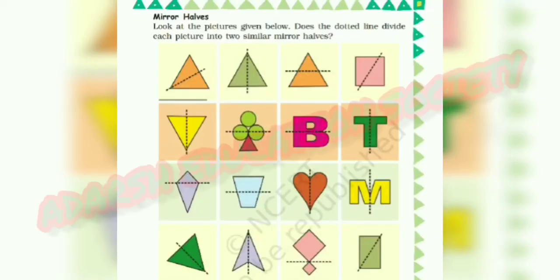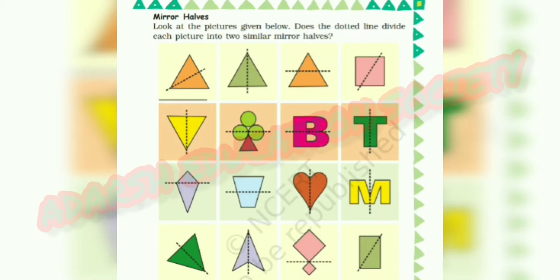Now I hope the concept of mirror half is clear. Children, you can all do practice at home. Now, look at your textbook — mirror half. Look at the pictures given below. Does the dotted line divide each picture into two similar mirror halves? We have to check if the picture is divided into two similar equal parts or not. In the first picture of a triangle, the dotted line clearly divides the picture into two similar halves, so you have to put a right tick mark.